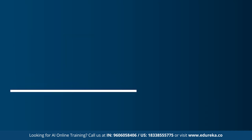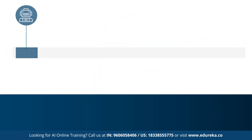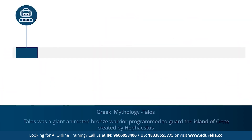Now let's get started with the first topic: the history of artificial intelligence. The concept of AI goes back to the classical ages. Under Greek mythology, the concept of machines and mechanical men were well thought of. An example is Talos — a giant animated bronze warrior who was supposedly programmed to guard the island of Crete.